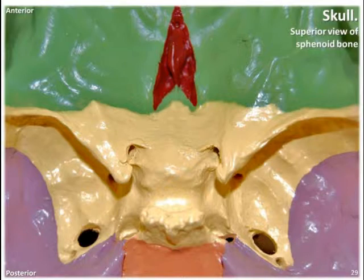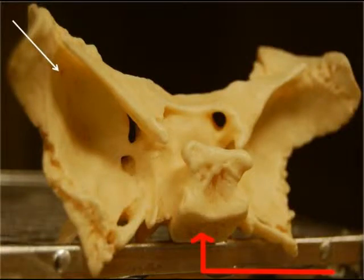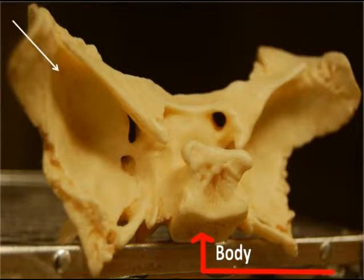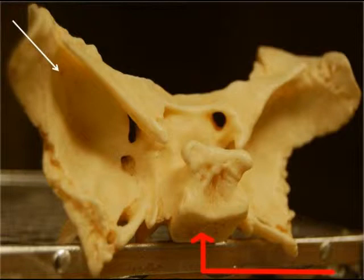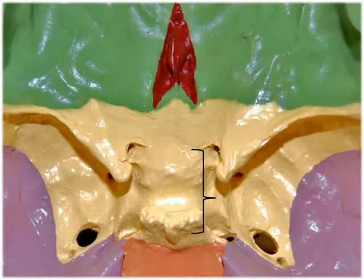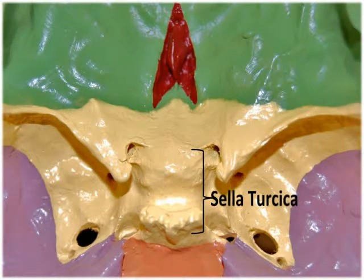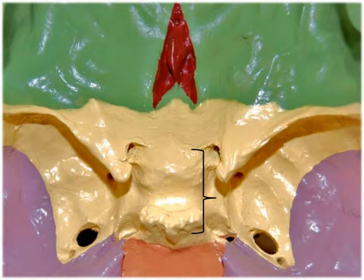Its shape is very unique — it resembles a moth or a bat in flight with its wings outstretched. It has a number of distinct bony landmarks and foramina. The body of the sphenoid bone is the box-like medial portion found between the ethmoid and occipital bones. In this body is a hollowed space called the sphenoid sinus, which drains into the nasal cavity. On the superior surface of the body is a saddle-shaped structure called the sella turcica — use this as a key landmark to locate the other bony structures and foramina.